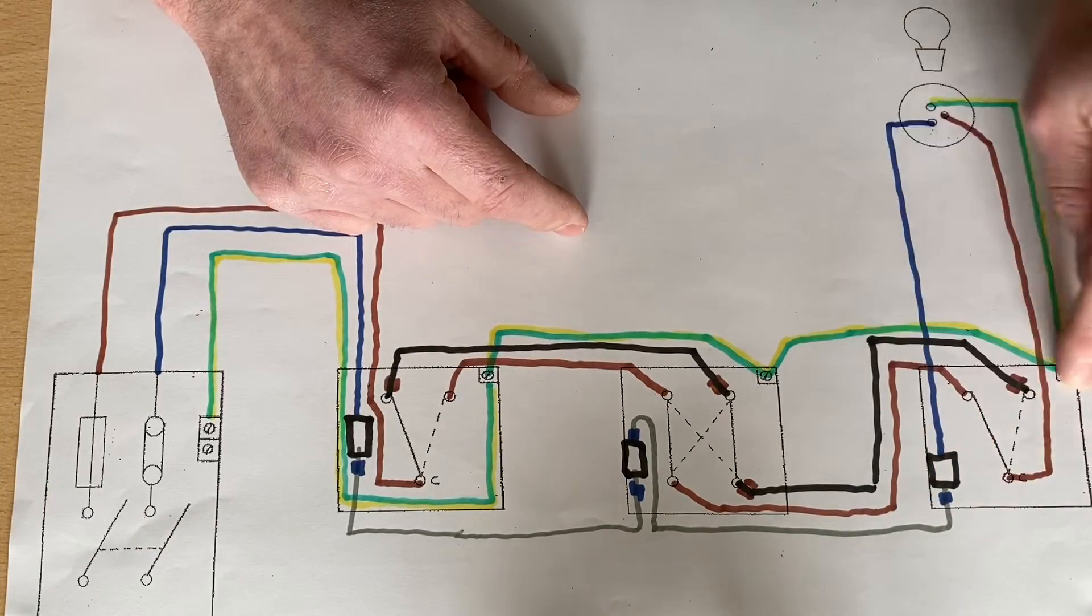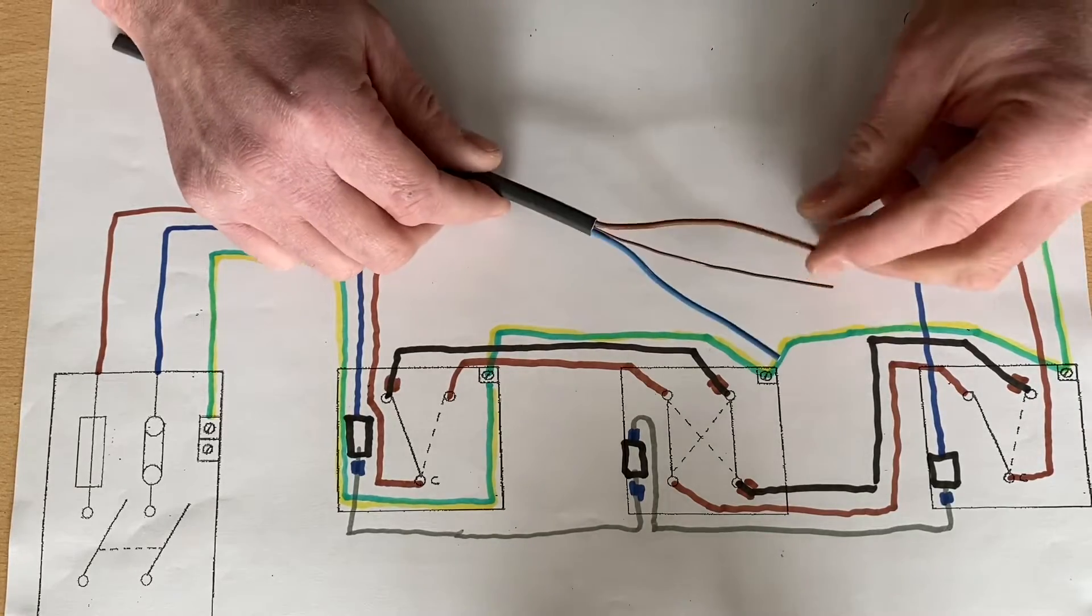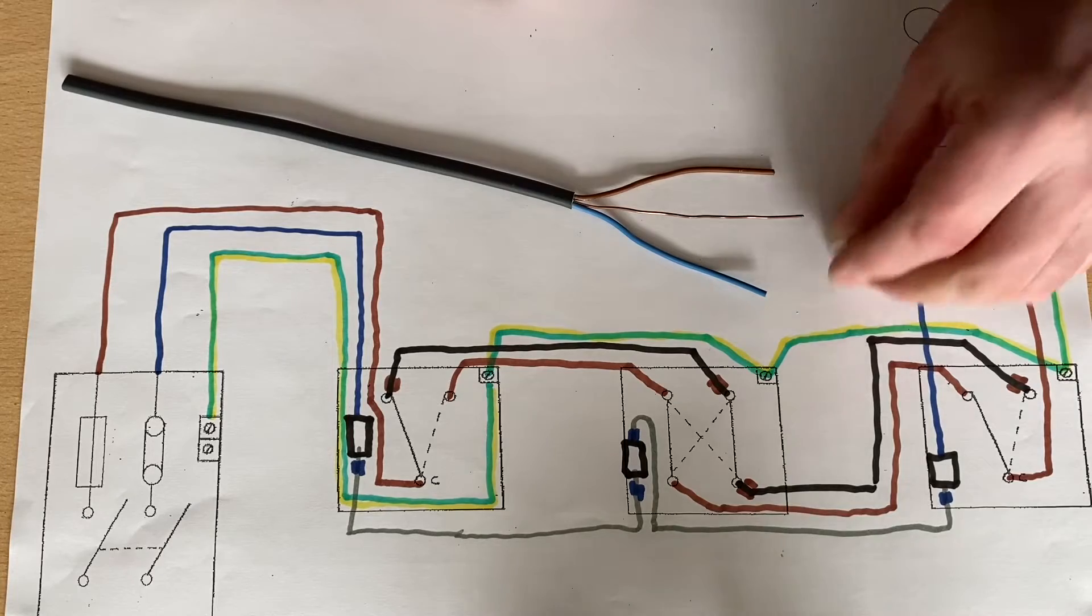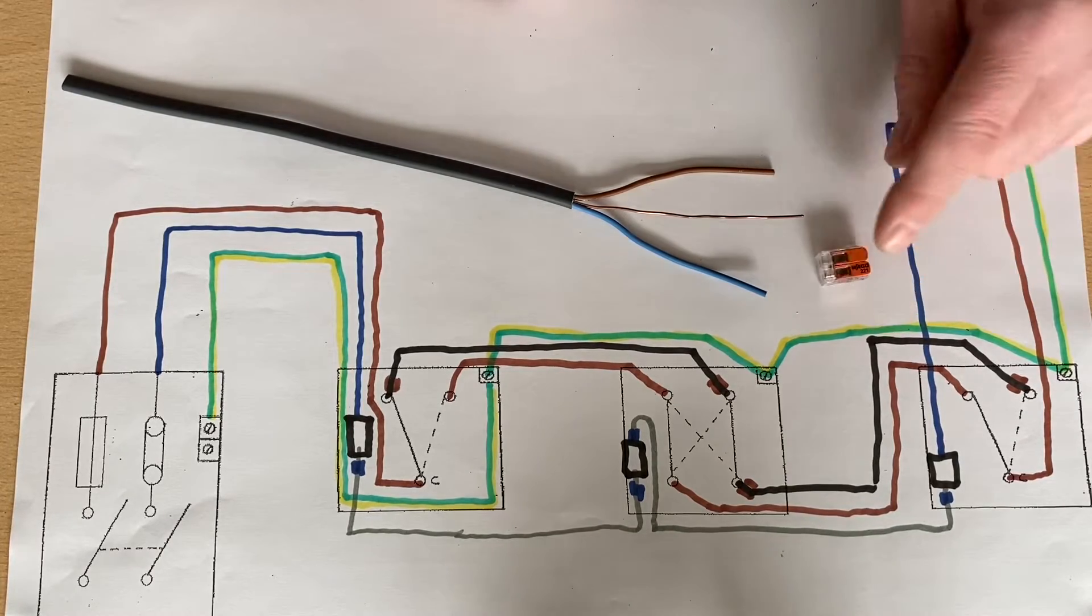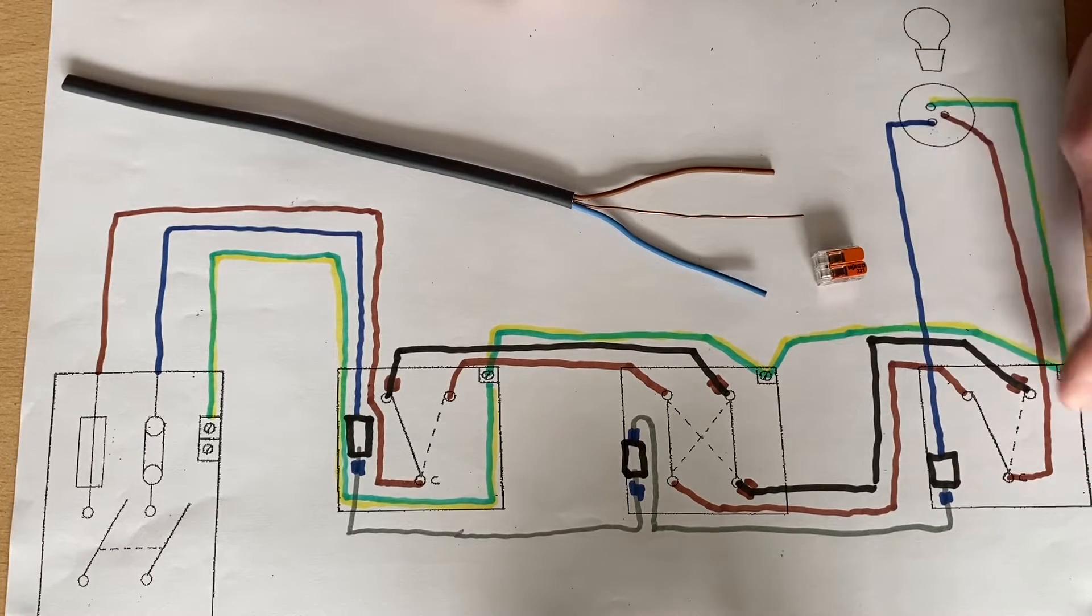So in this lighting point here, yes, we do have a CPC. And if I needed to bring a feed into another room, I'm going to need to take the CPC through. I have a neutral, which is probably a Wago-style connector in there. And I have, have I got a permanent line connection?